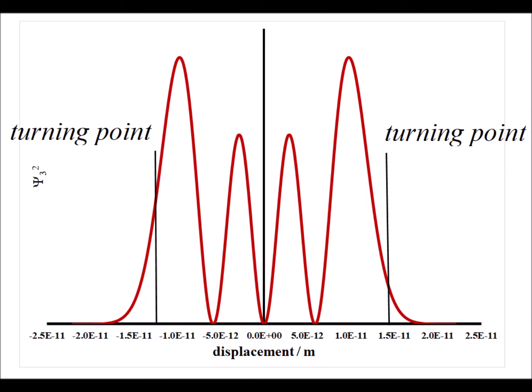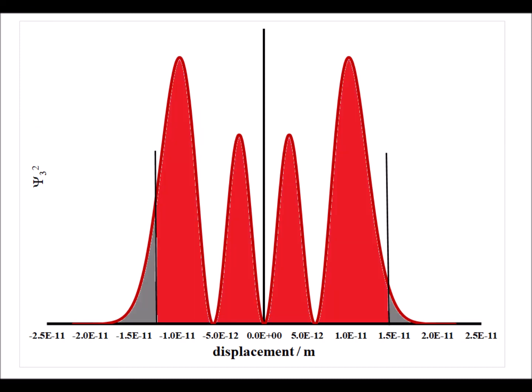Here we have for the n equals three state. Again, highlighting the classical limits, the turning points, shown as the vertical black lines.